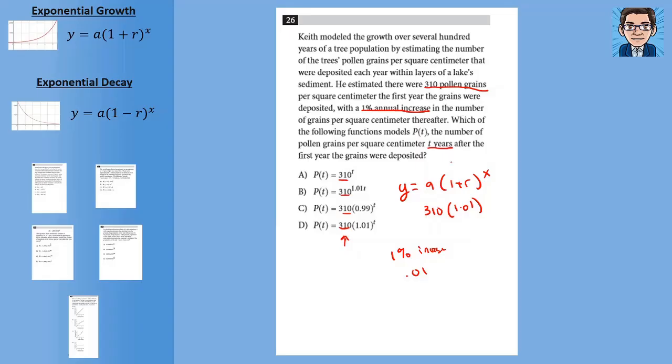But in here we're going to do 1 plus .01 or 1.01. And we don't know how many years we're doing it for. We just have a variable that we're doing it for t years. So we're going to end up like this, which is choice d. And notice c, that would be if you did exponential decay, right? So that would be if you took 1 minus that.